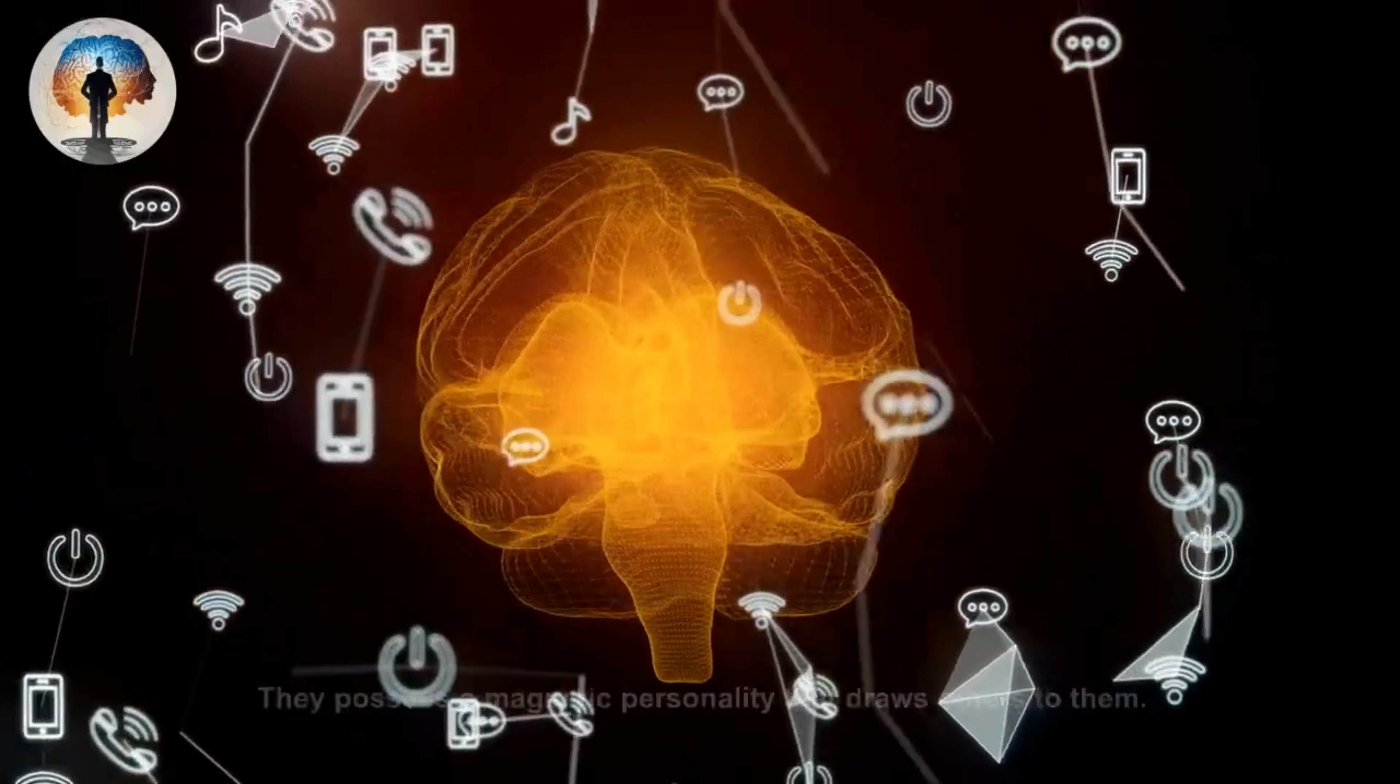Small trusted circles: rather than having an extensive social network, sigma males value having a small circle of close and trusted friends. They prioritize depth in relationships and quality of interactions over quantity. Avoiding the spotlight: sigma males are more comfortable behind the scenes and tend to avoid being the center of attention. They may feel uneasy with public recognition and prefer to let their actions speak for themselves.